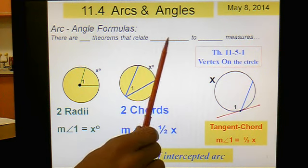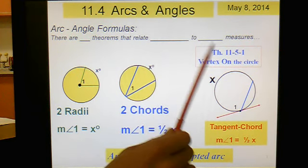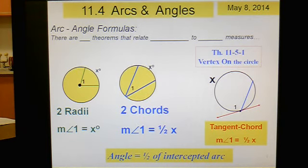So again, we're coming up with theorems that relate arcs and angles, arcs and angles or angles and arcs, I don't care which order you put that in. There's a total of six of them you can see on your paper. Five of them are theorems or formulas, and one of them is just a basic concept of a central angle.